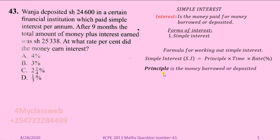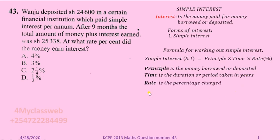What is Principal? What is Time? And what is Rate? Principal is the money borrowed or deposited. In our case, the Principal is 24,600. Time is the duration or period taken, in years. In our case, this money stayed with that financial institution for nine months. This is not yet a full year — it is just a fraction of a year. So when working out simple interest, we use time calculated in years, per annum. Rate is the percentage that is charged.